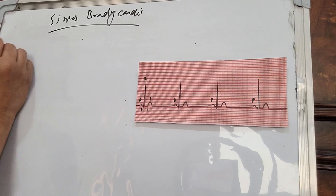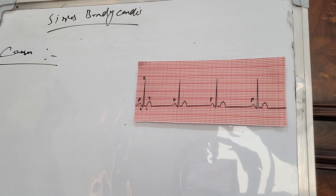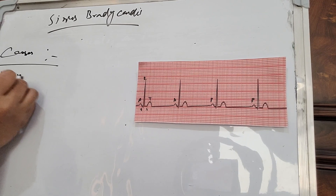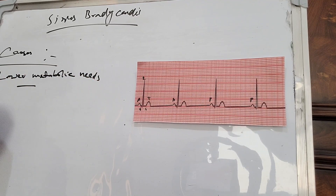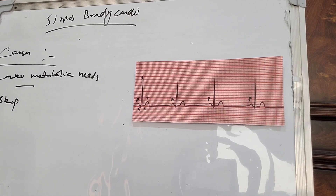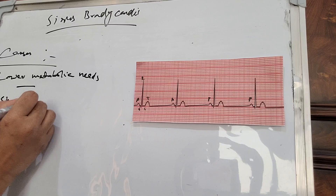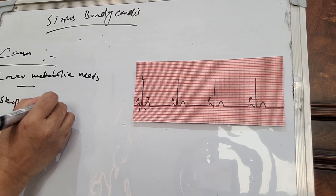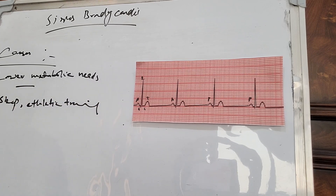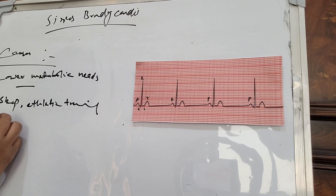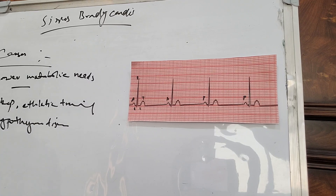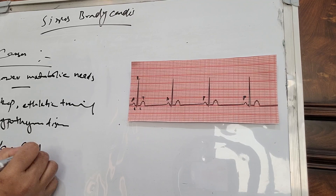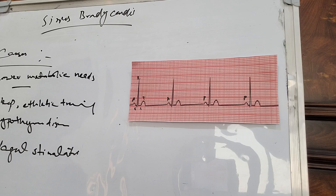What are the causes of sinus bradycardia? The causes include lower metabolic needs — for example, during sleeping we can have sinus bradycardia. Athletic training: a person doing athletic training can also have sinus bradycardia. Hypothyroidism also causes sinus bradycardia. Some vagal stimulation also creates sinus bradycardia.